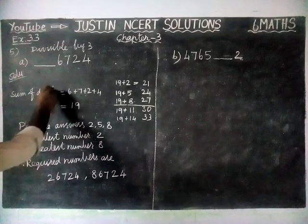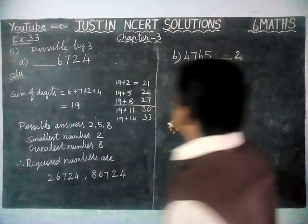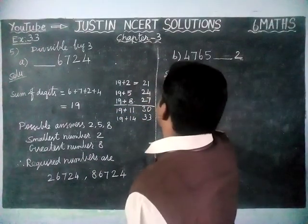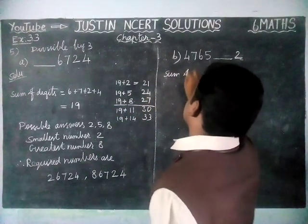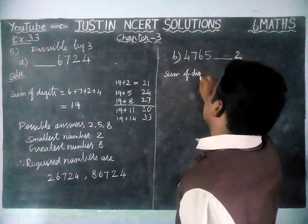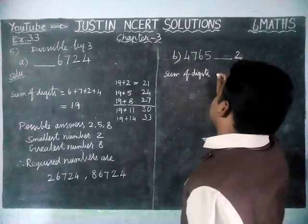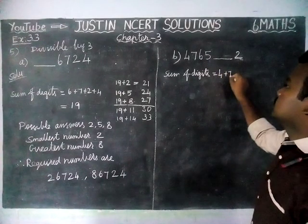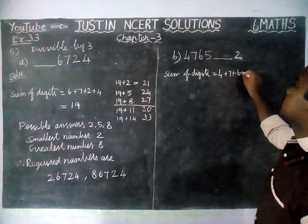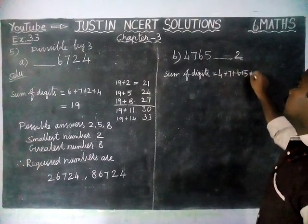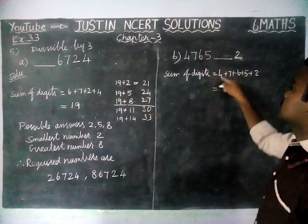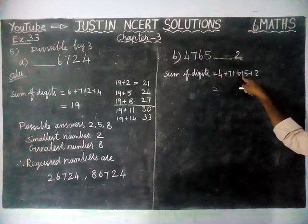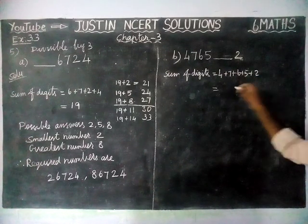Next, we are going to find option B. The same concept we are going to apply here also. First, we are going to find the sum of digits. Sum of digits is equal to 4 plus 7 plus 6 plus 5 plus 2. When we add this: 11, 17, 20, 22, 24.